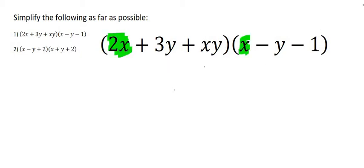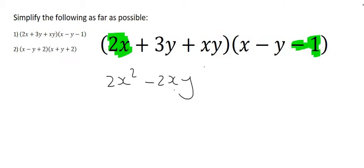Let's start by multiplying the 2x with the x, and that's going to give us 2x squared. The 2x with the minus y gives us minus 2xy. 2x times by minus 1, that's just minus 2x. So we've now used this 2x and the next step would be to use this 3y.